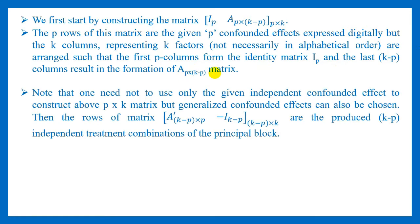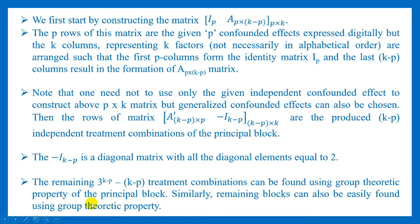Note that one need not use only the given independent confounded effects to construct the p×k matrix. One can also use generalized confounded effects, because the p independent confounded effects given may not always yield the identity matrix of order p. The matrix A' and -I of order k-p gives us the independent treatment combinations of the principal block. Each block contains 3^(k-p) treatment combinations; k-p of those are found from A'|-I, and the remaining 3^(k-p) − (k-p) treatment combinations can be found using the group theoretic property of the principal block.